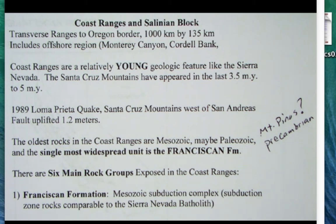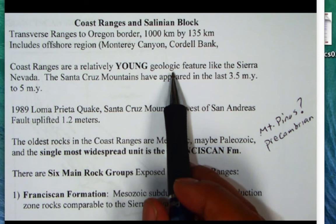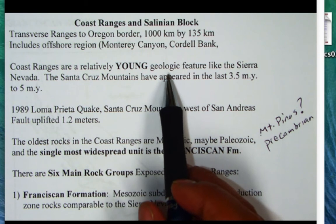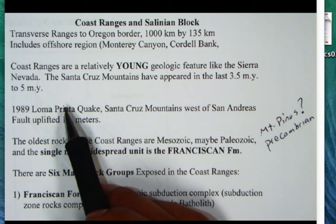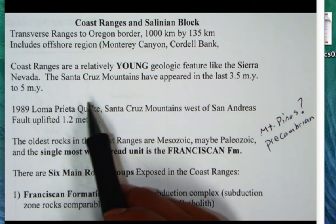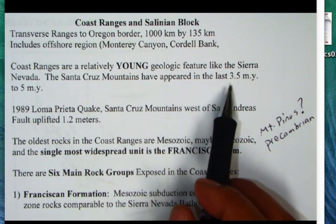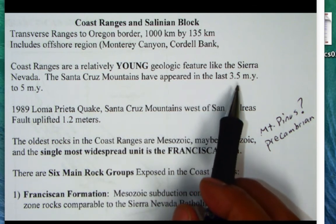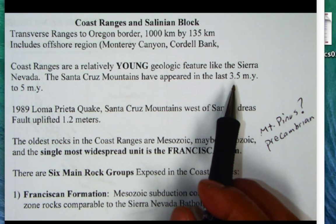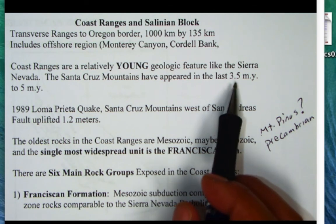One thing the Coast Ranges share in common with the Sierra Nevada is that they're both young geologic features, both uplifted in the last five million years. In fact, some coast range rocks are as young as 3.5 million years old — relatively young rock formations now exposed above sea level, and these were once marine deposits.